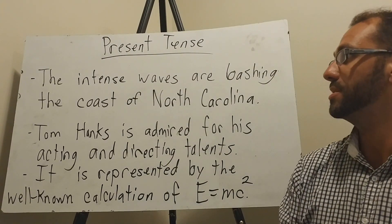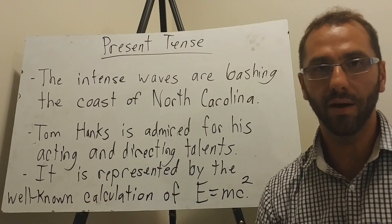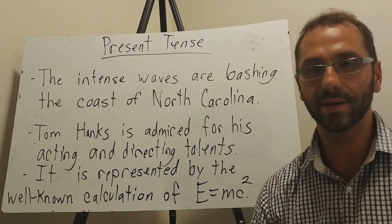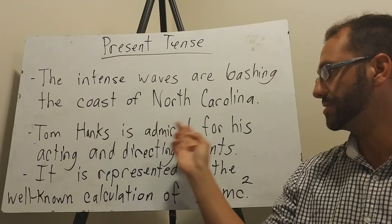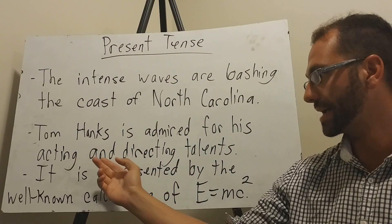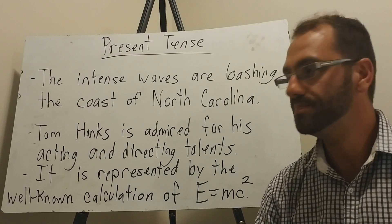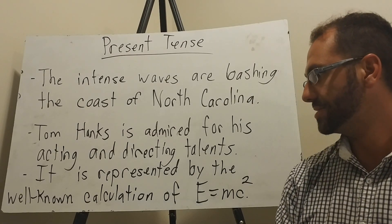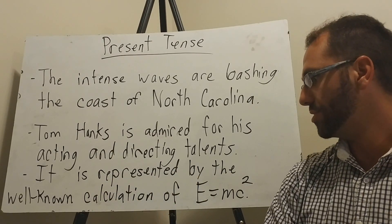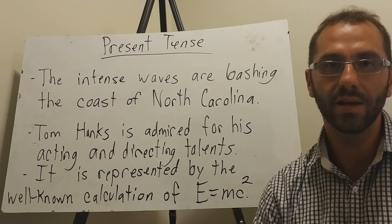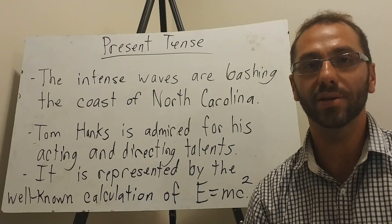The first one is: the intense waves are bashing the coast of North Carolina. Next, Tom Hanks is admired for his acting and directing talents. And last, it is represented by the well-known calculation of E equals MC squared.